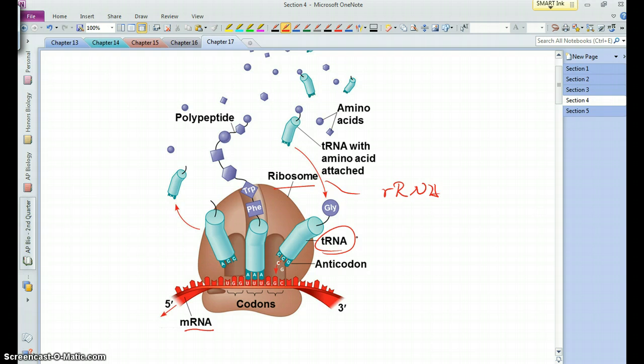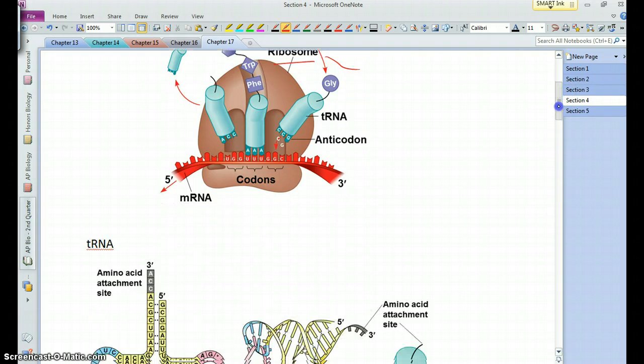Those are our three RNAs involved that are going to get this job done. The tRNAs are carrying the amino acids and the rRNAs make up the bulk of the ribosome that is the site of translation.